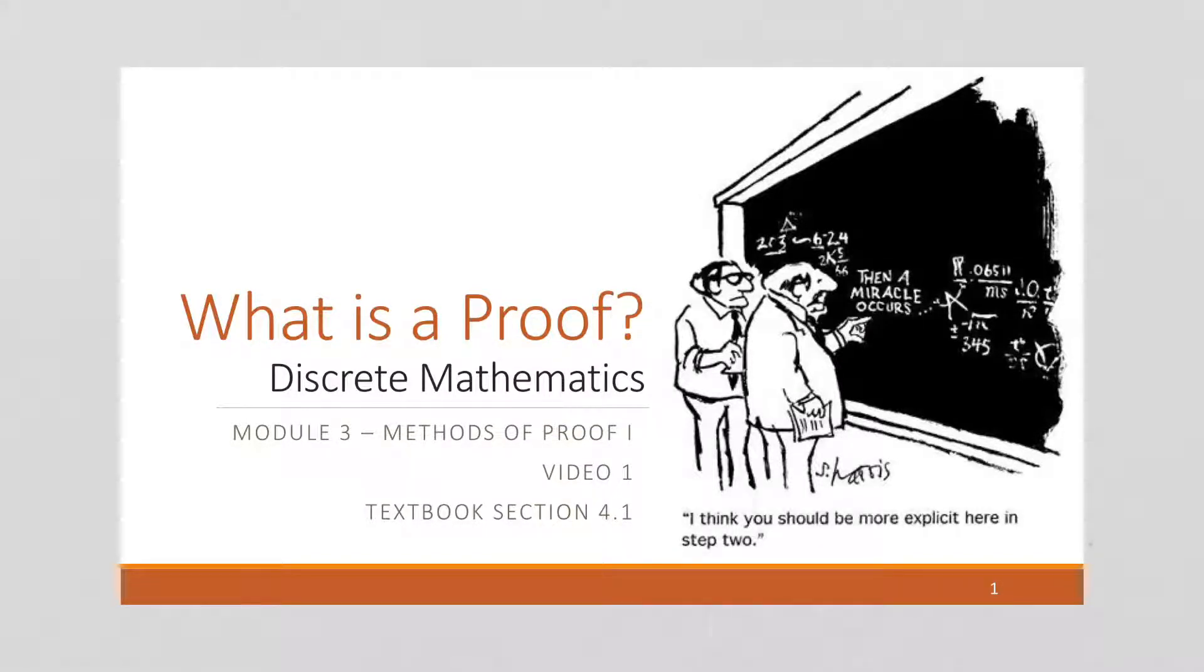Okay, this is discrete mathematics. We're in module 3, where we're going to talk about methods of proving topics. In particular, we're going to look at direct proofs in module 3. In module 4 we will start working with indirect proofs, and later on we'll work with proofs by induction and other types of proofs. So this first video we're going to talk about what is a proof.